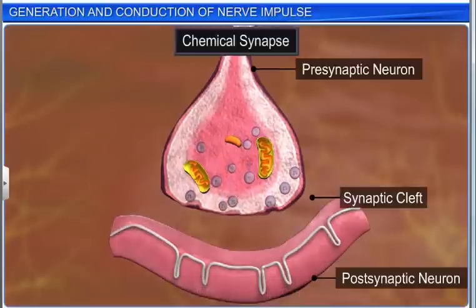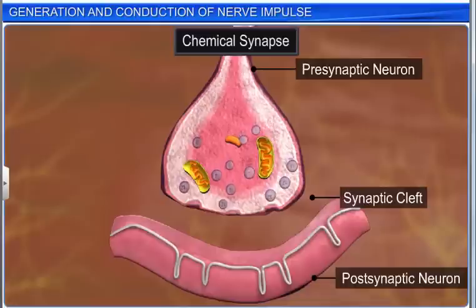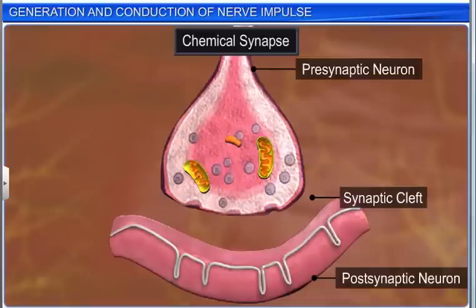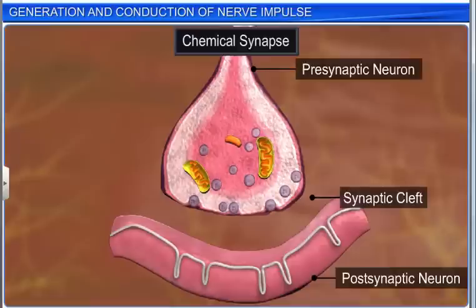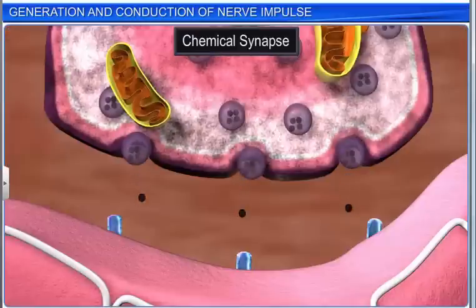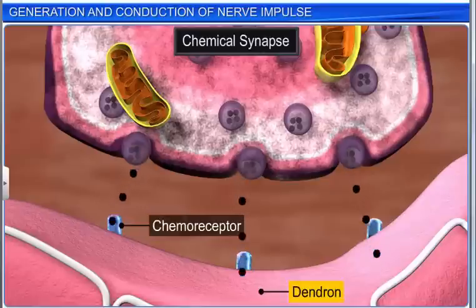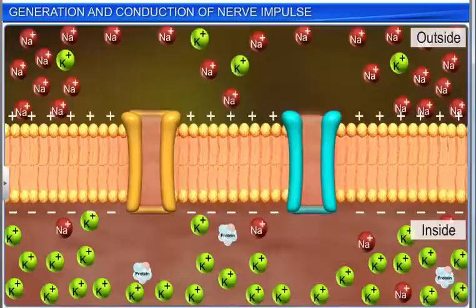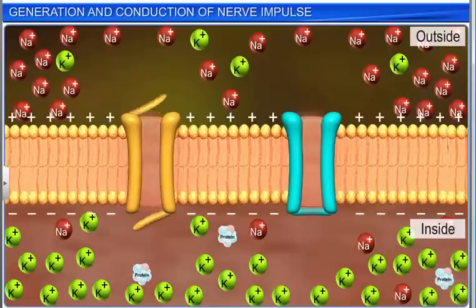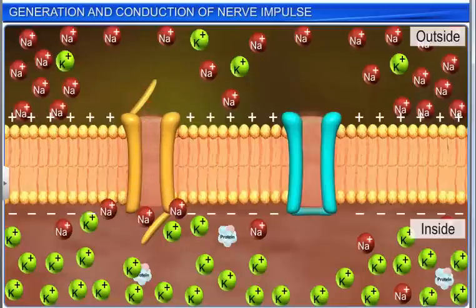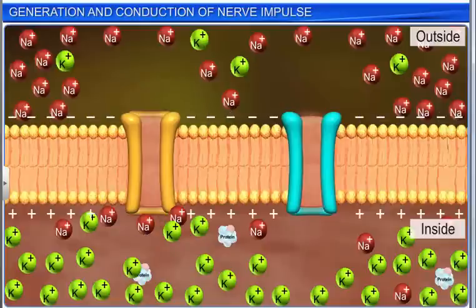When an impulse or action potential arrives at the axon terminal, it stimulates the movement of the synaptic vesicles towards the pre-synaptic membrane. Synaptic vesicles fuse with the plasma membrane and release their neurotransmitters into the synaptic cleft. The neurotransmitters thus released bind to their specific chemoreceptors present on the post-synaptic membrane of the dendron. This binding opens sodium ion channels that allow the entry of ions to generate a new potential in the post-synaptic neuron, which may lead to the development of an excitatory or an inhibitory new potential.